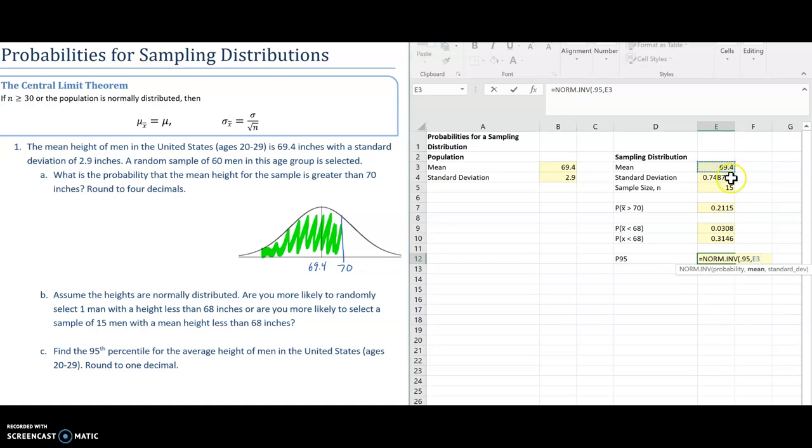So I'm going to do 0.95 for the 95th percentile. The mean, I'm going to grab this, but because of the way I set it up, I'm going to be able to just go and change it. So I'm going to change that back to 60, like part A. That fixes my standard deviation to what it was before. And I see that my 95th percentile is 70.02 inches.